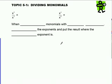Topic 5-1 and 5-2, dividing monomials. For the first example, I have x to the 5th, which means x multiplied with itself 5 times, over x to the 3rd.